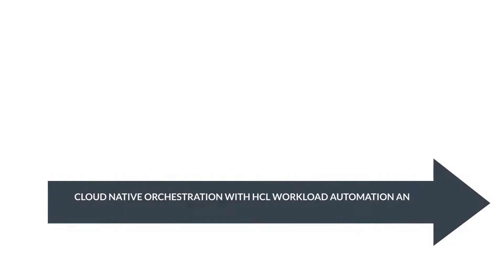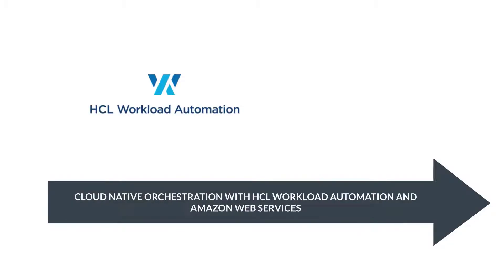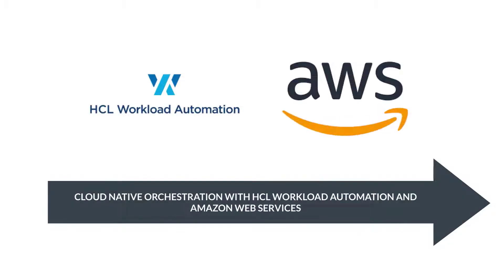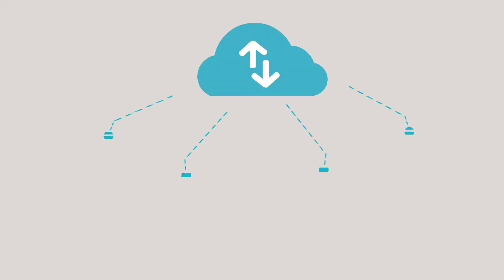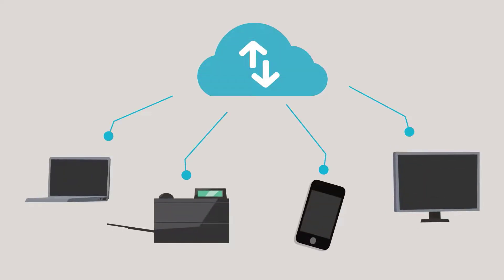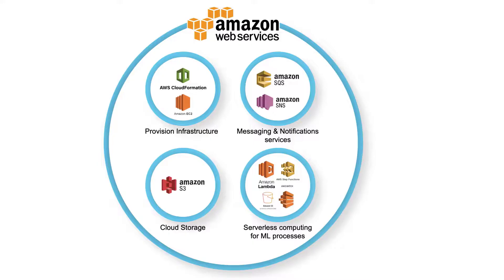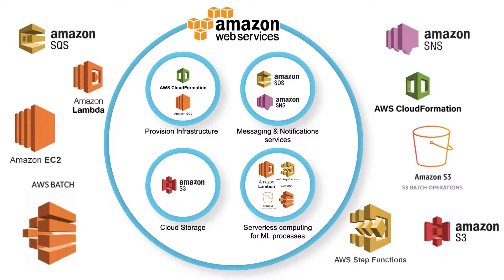Cloud native orchestration with HCL Workload Automation and Amazon Web Services — orchestrate cloud native applications and bridge business flows between cloud and on-premises environments. Manage cloud native applications locally or remotely with our integrations. Automation Hub provides you with a wide range of AWS plugins under one roof.